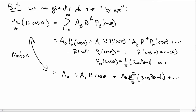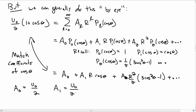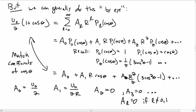Now by inspection, we can match the coefficients of powers of cos θ on both sides of the equation. For the constant term to match, we need a₀ = u₀/2. For the coefficient of cos θ to match, we need a₁ = u₀/(2R). There is no cos²θ term on the left-hand side, so a₂ must be zero. By similar reasoning, a₃, a₄, a₅, and all a_l's for l not equal to 0 or 1 must be zero.